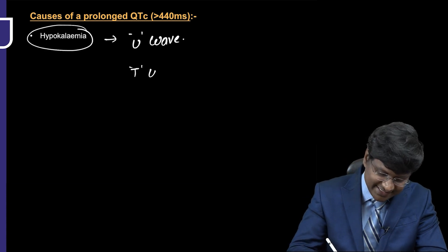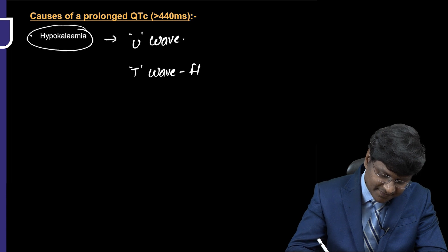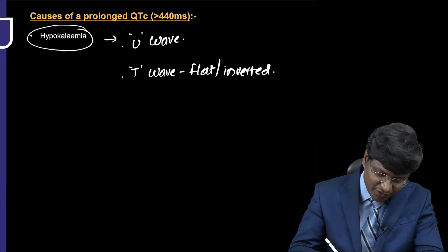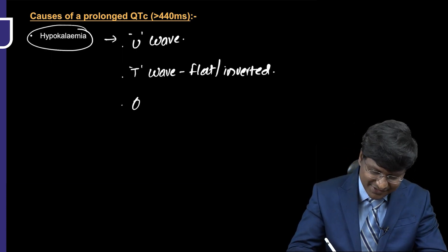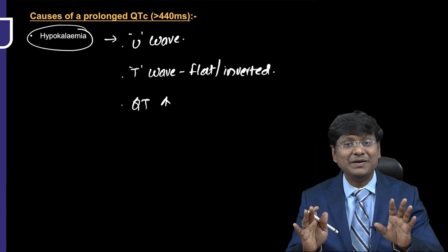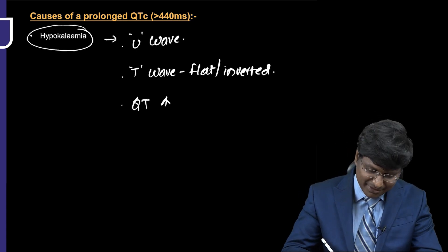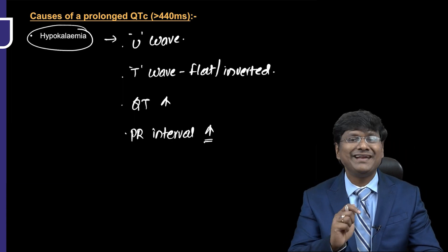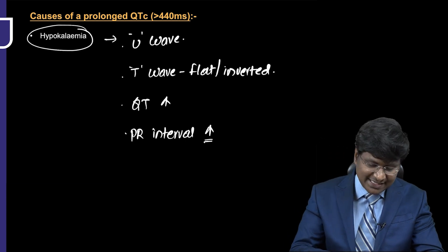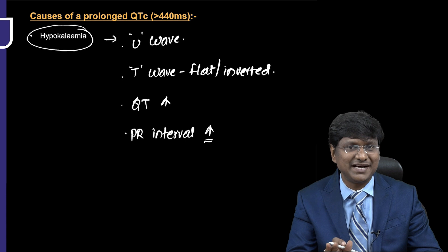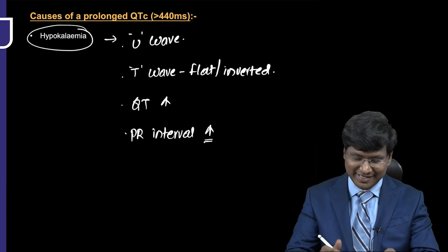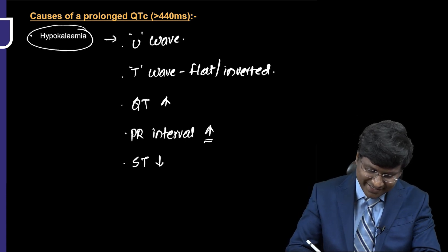The second important ECG change in hypocalcemia is that the T wave becomes flat or inverted. The third is QT prolongation. Not only the QT interval — remember, even the PR interval is also prolonged in hypocalcemia.